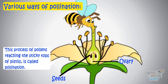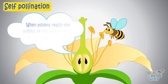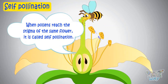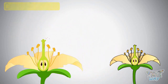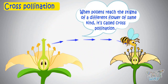Pollens may reach the stigma of the same flower or the stigma of different flowers. When pollens reach the stigma of the same flower, it is called self-pollination. And when pollens reach the stigma of different flowers of the same kind, it's called cross-pollination.